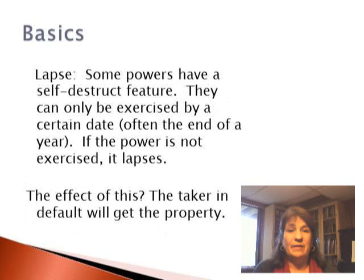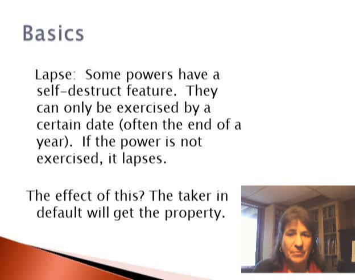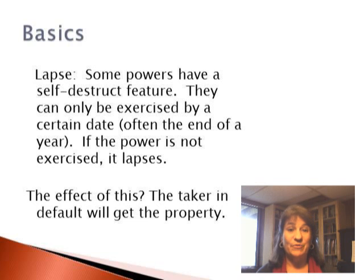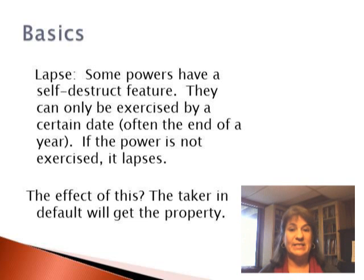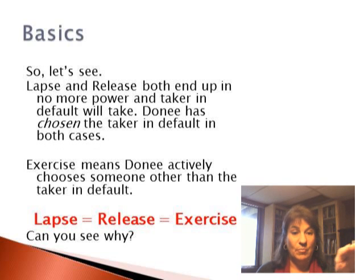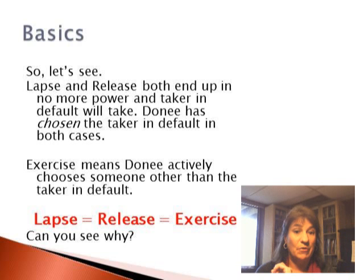Lapse: some powers have a self-destruct feature. They can only be exercised by a certain date — maybe by December 15th in writing or something. And if the power is not exercised, it lapses, disappears. What happens then? The taker in default is going to get the property. Essentially it stays in the trust and goes wherever the trust says. Lapse and release both end up in no more power, and the donee has chosen the taker in default in both cases.